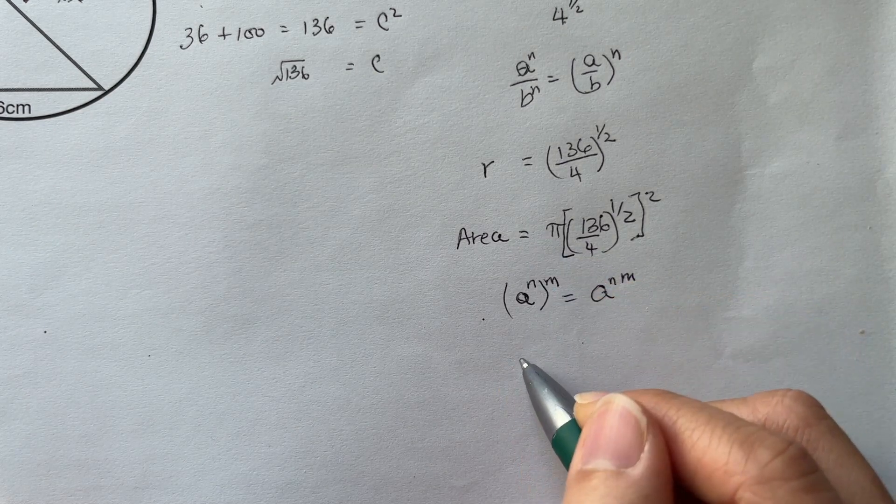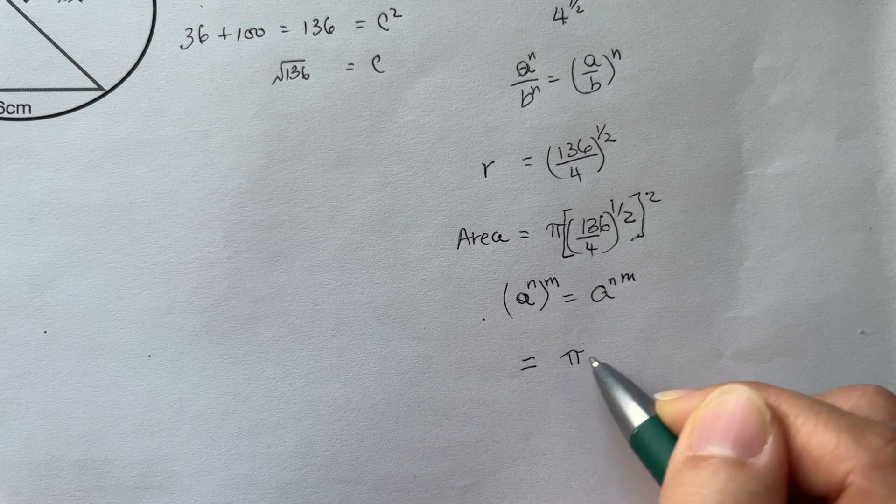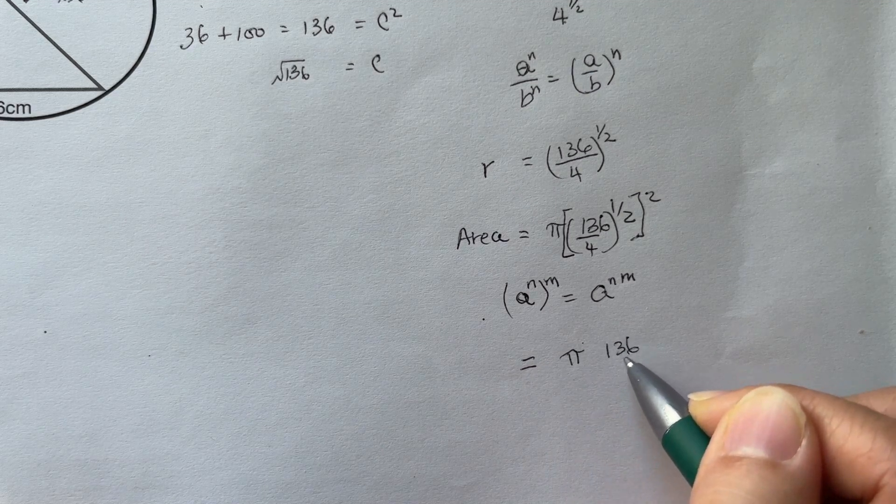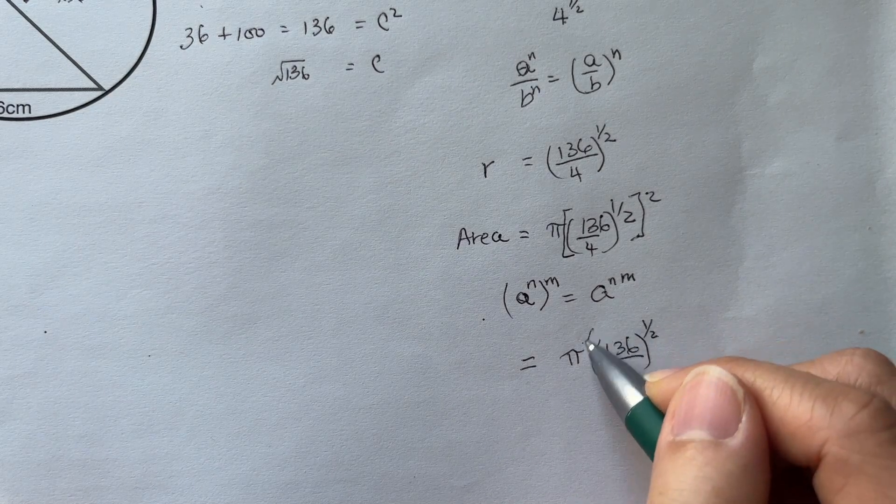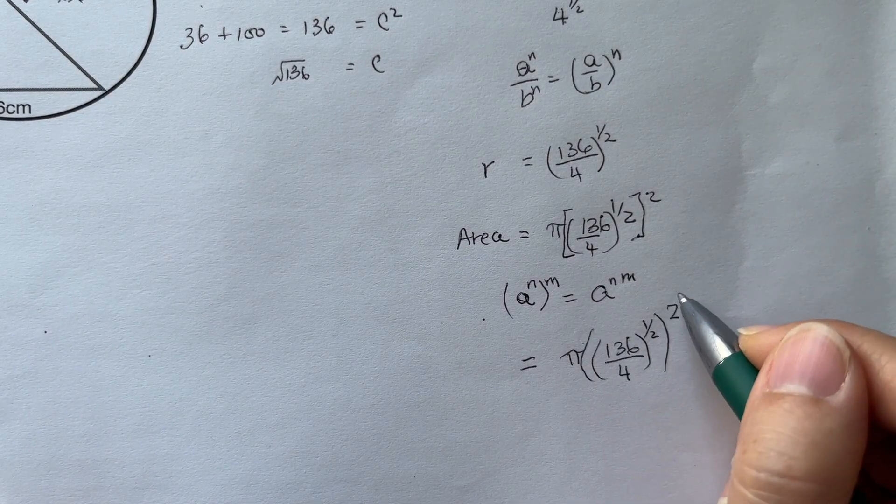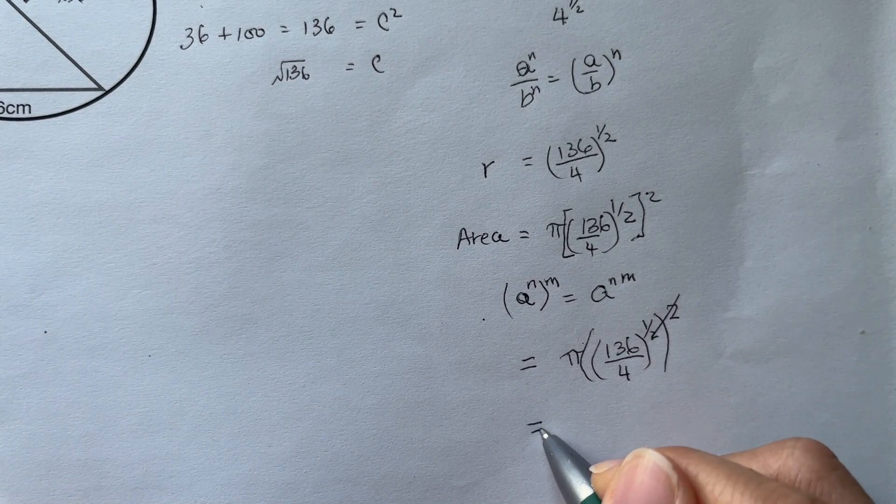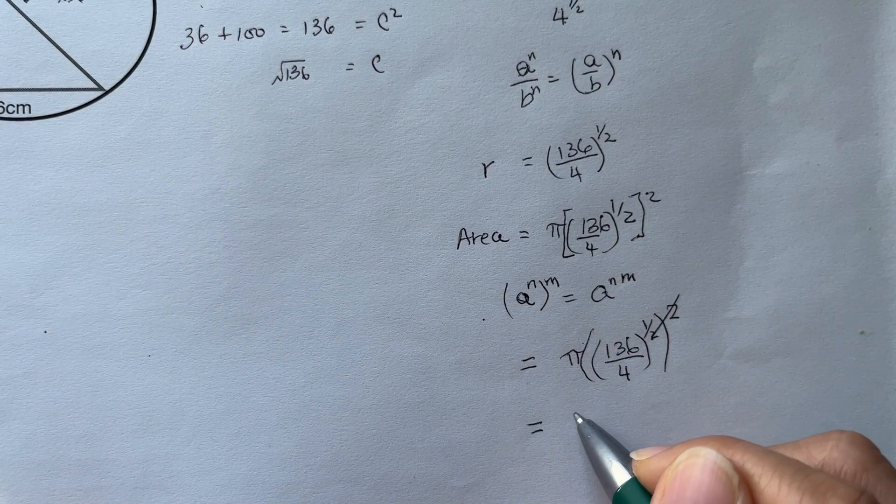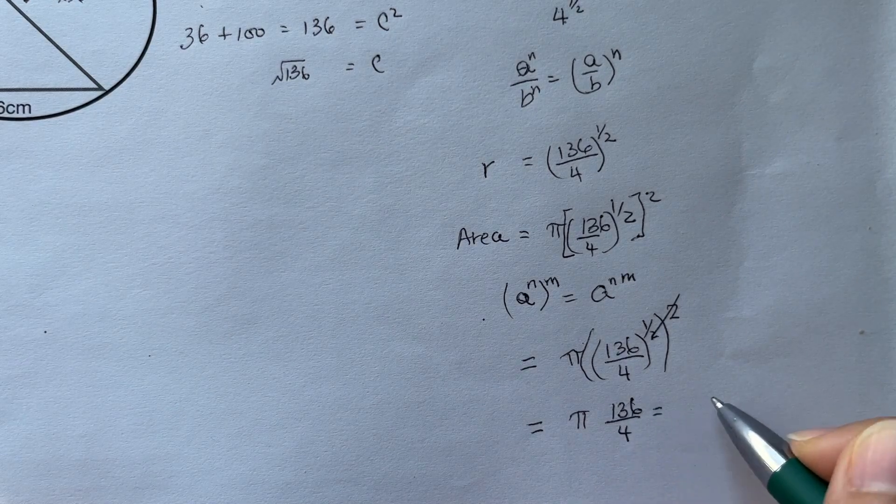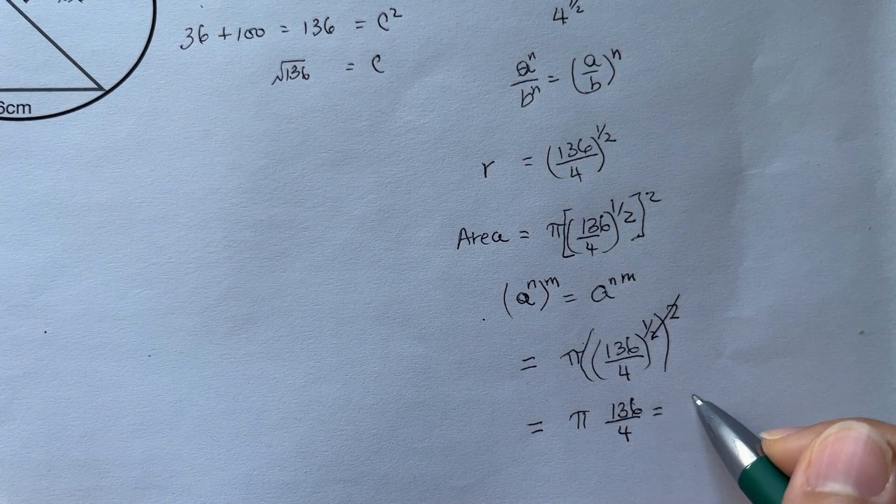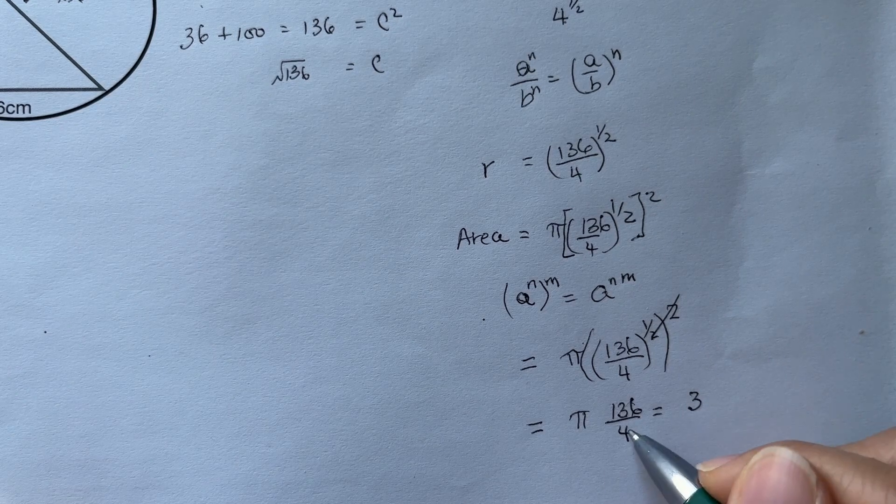Now the area becomes π times 136 divided by 4, and the 1/2 and the 2 multiplied together cancel each other out. Dividing 136 by 4 equals 34, so the answer is 34π.